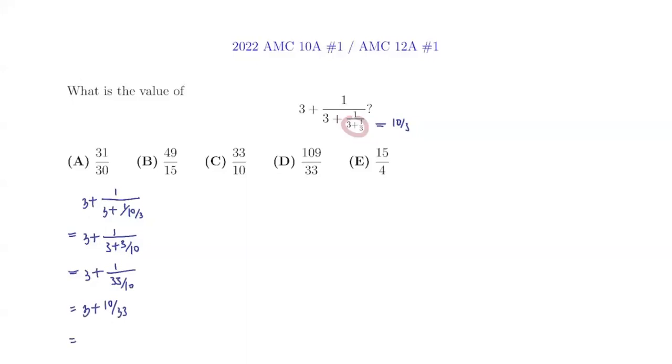So overall, we realize that 3 times 33 is 99. 99 plus 10 is 109, so we have a value of 109 over 33 as the value of our expression here, and that is answer choice D.